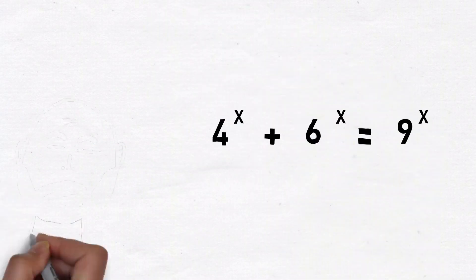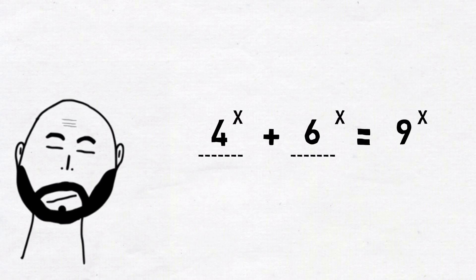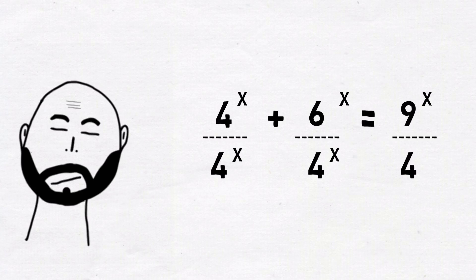Ok, now here is one solution. Let us try to simplify things. Rather than x in 3 places, let's try to have x in 2 places. And one way of doing so is dividing both sides by 4 to the power x.